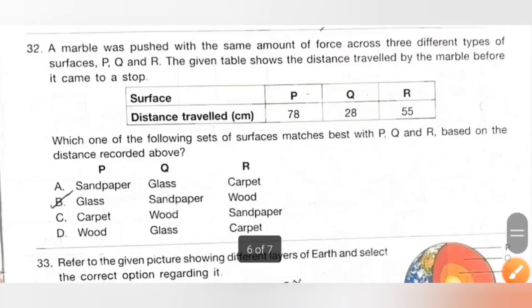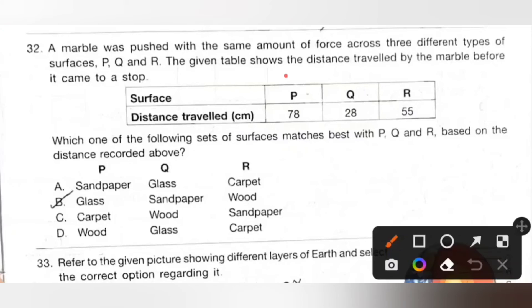Thirty-two: A marble was pushed with the same amount of force across three different types of surfaces P, Q and R. The given table shows the distance traveled by the marble before it came to a stop. The distance traveled on surface P is maximum, so P may be more smooth surface and Q is the most rough surface. R is in between P and Q. So P may be glass, Q may be sandpaper and R may be wood. So option B is the correct answer.